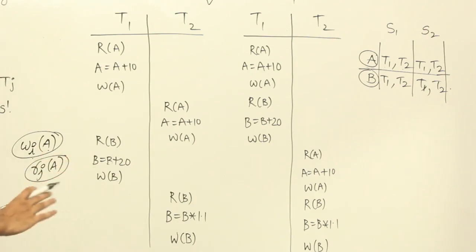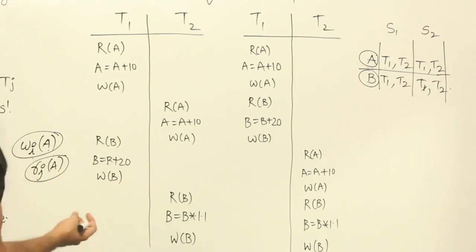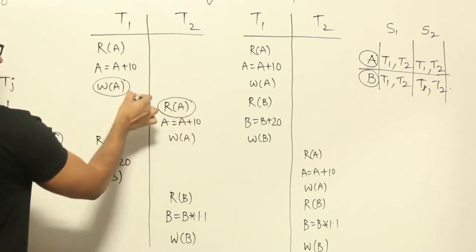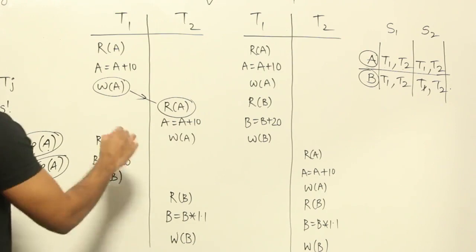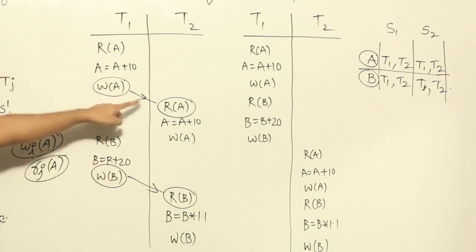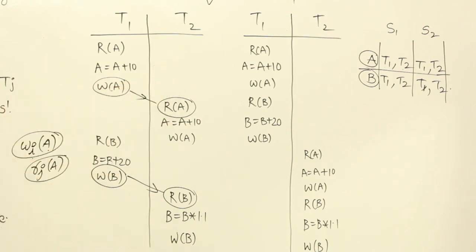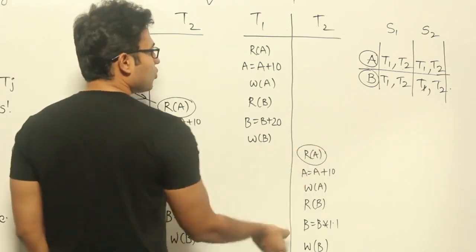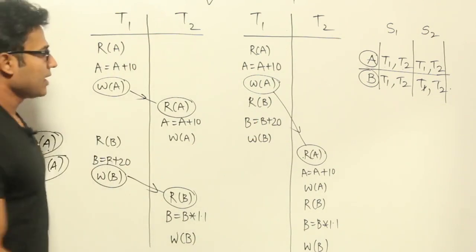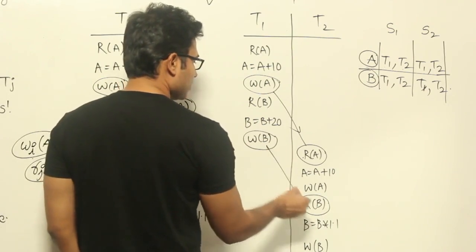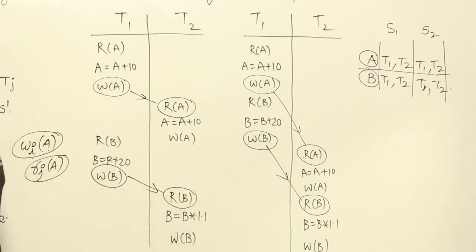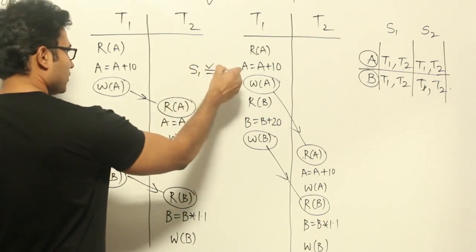Now the third rule says that if there is any write-read dependency, that should be in the same order. Looking at data item A in S1: T1 is writing A and T2 is reading it. For data item B also, T1 is writing and T2 is reading. Now in S2, the same thing should happen. Coming to A in S2, there is a read A — whatever was written by T1 is being read by T2. For B also the same thing has happened. Therefore, write-read actions are in the same order, and the third rule is also satisfied. So we can say that S1 is view equivalent to S2.